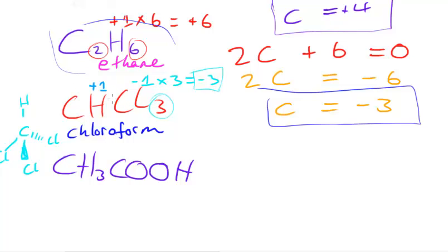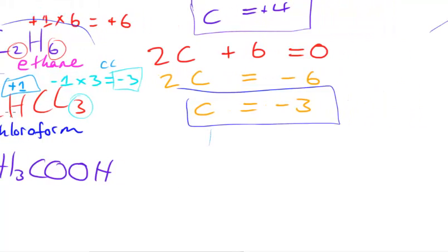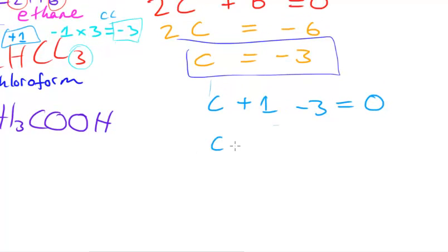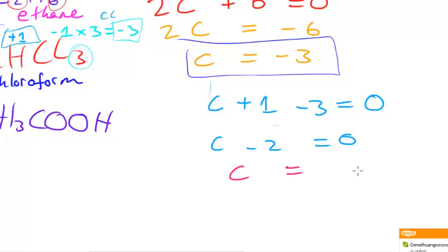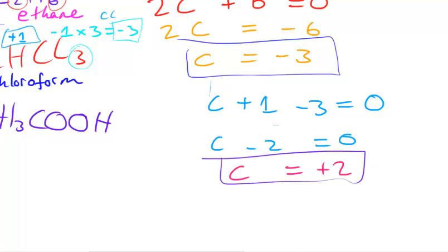Putting this into an equation: carbon + (+1 from hydrogen) + (−3 from chlorine) = 0. Simplifying: carbon + 1 − 3 = 0, so carbon − 2 = 0. Adding 2 to both sides gives carbon = +2. So the oxidation number of carbon in CHCl3 (chloroform) is plus 2.